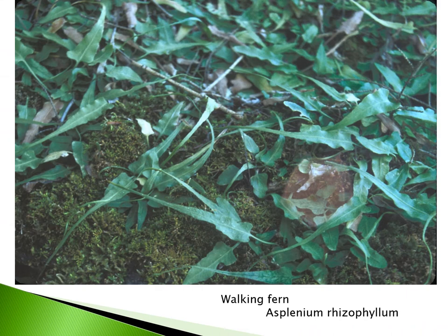Walking fern, Asplenium rhizophyllum, is a really interesting species and a must for rock surfaces — it does not grow well in soil. It produces long triangular fronds, and the tips of those fronds will touch the ground or moss and start a new fern, hence the common name 'walking fern.' One plant will walk along and form a colony, so all the plants in an area may be attached to or descended from one original plant. Challenging to get established but fairly easy to grow once it takes hold; these plants creep along the surface of rocks reaching only one or two inches high.